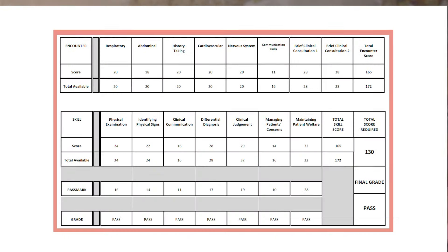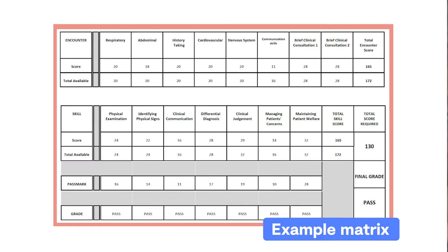This is summarized on a matrix provided to you after the exam when results are announced. As you can see in this example matrix, each encounter is scored, but the overall pass mark is determined by the candidate meeting the minimum mark across each individual clinical skill, plus an overall score of at least 130.